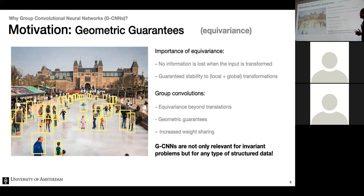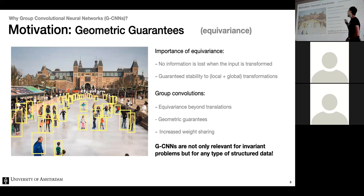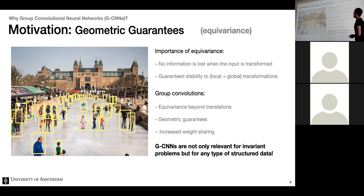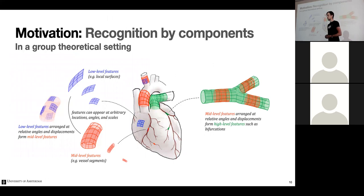Group convolutional networks are not only relevant for invariant problems. Even in computer vision, where there's a clear horizon and people skate in upright positions — not a fully invariant problem — equivariance still helps a lot because of weight sharing and guaranteed stability. Even low-level features like edges can be detected at all possible transformations to build higher-level representations. Experimentally, even for non-invariant problems, group convolutional networks outperform standard ones.